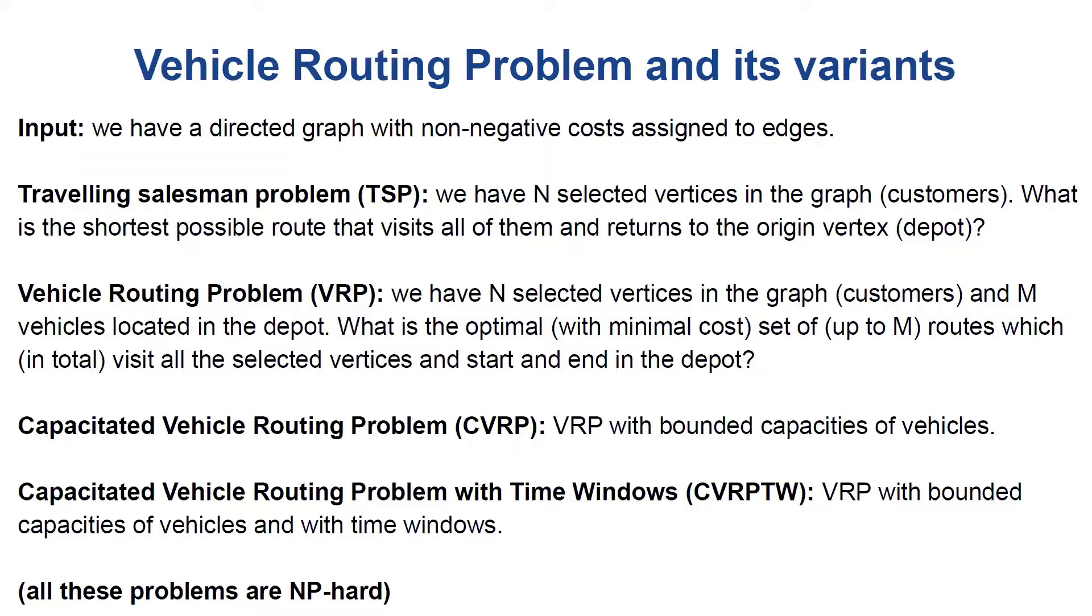If we have only one vehicle, then we have an instance of the traveling salesman problem. In general, if we have more vehicles and all of them should start and finish in the depot, we have the vehicle routing problem.